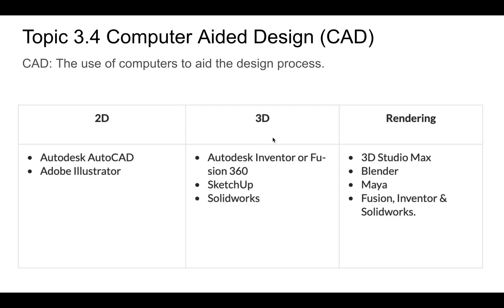In the 3D space, we have Fusion 360, but you can also use Google SketchUp or SolidWorks. Rendering is where you take a three-dimensional object and make it appear to be a real object. Software for rendering includes 3D Studio Max, Blender — some grade 10 students last year were very into Blender — as well as Fusion 360, Inventor, and SolidWorks.